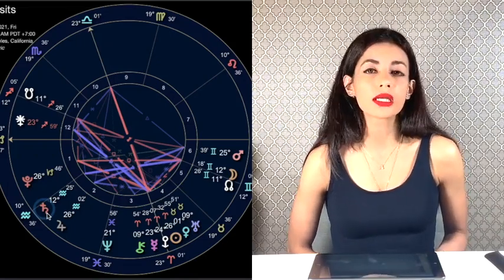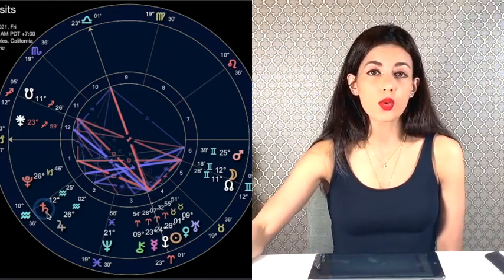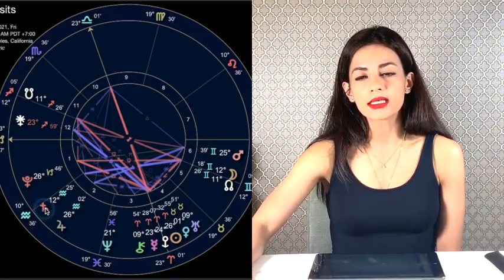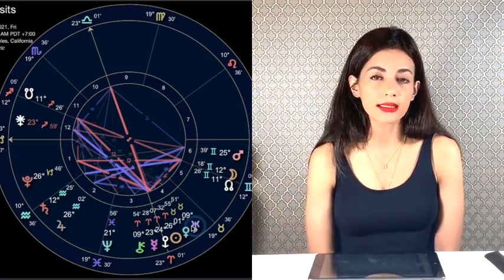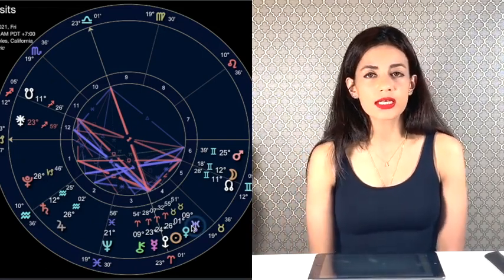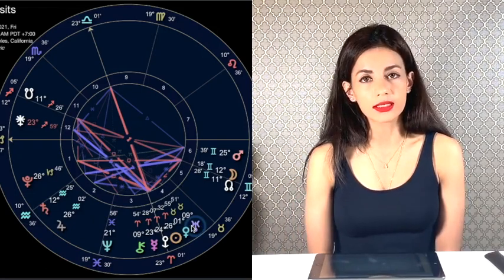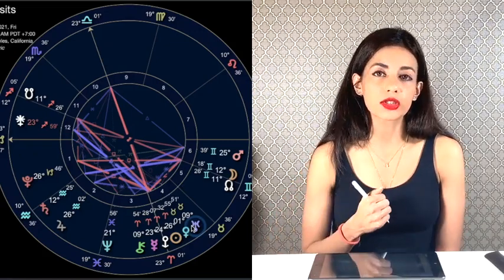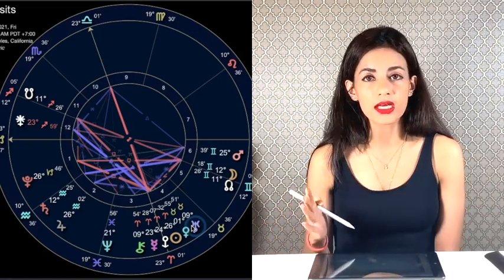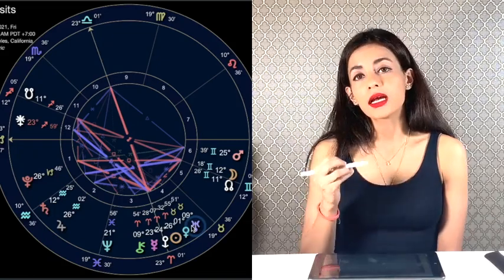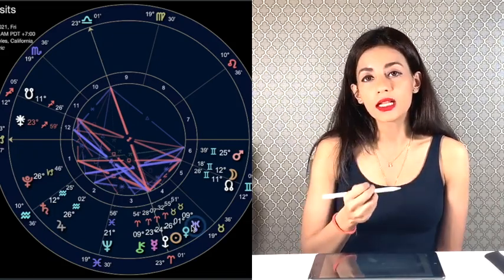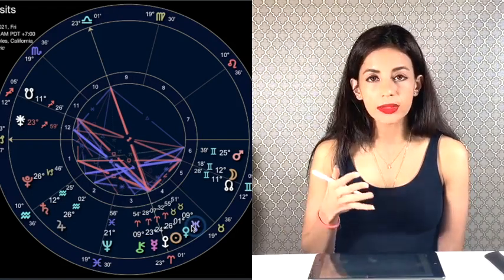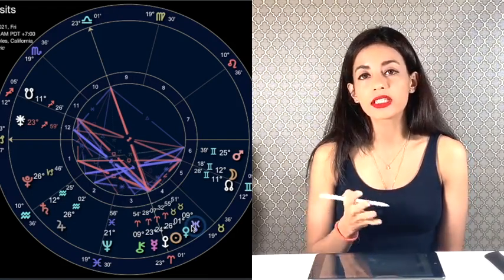The second energy that we're going to be in all year is Saturn square Uranus. Saturn is here and Uranus is here, and they're in a square, a 90-degree angle. The gist of this energy is that we have to come into our authentic self. We have to leave behind who we think we should be and become who we actually are on the inside. By the end of the year, as the square gets over, that real authentic self will become tangible, will become palpable. This may not feel easy because the square feels challenging.